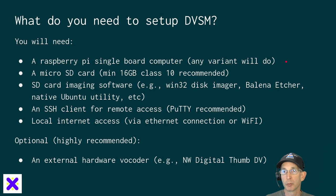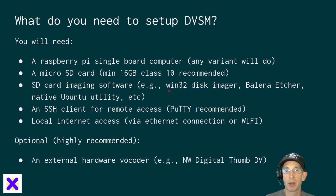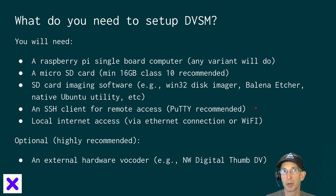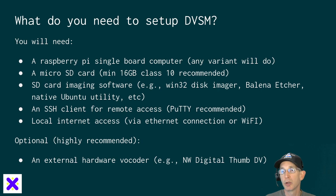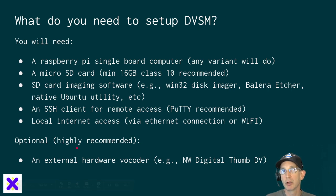You're going to need a Raspberry Pi single board computer — any variant will do; I use a Raspberry Pi 3B Plus. You'll need a micro SD card; we recommend a 16-gig Class 10 card. For SD card imaging software, Windows users might use Win32 Disk Imager, Balena Etcher is another great multi-platform option, and Linux users have a native utility built into Ubuntu and many distributions. You'll also need an SSH client like PuTTY for remote access, local Internet access via Ethernet or Wi-Fi, and optionally but highly recommended, an external hardware vocoder like the Northwest Digital ThumbDV — you'll need this for DSTAR with good quality voice.